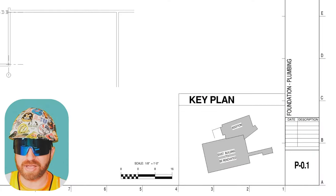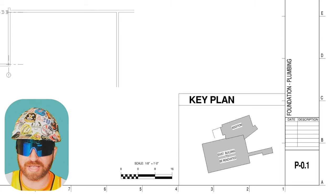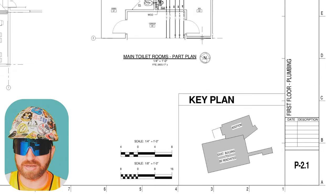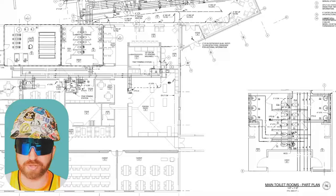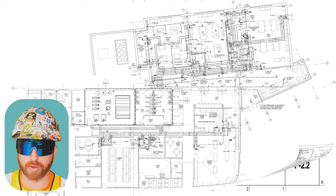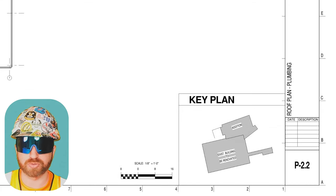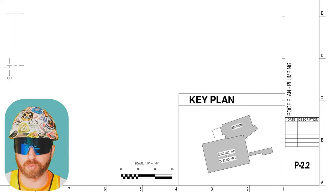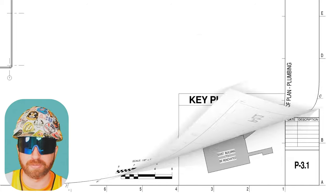Next up, we have P-0.1 Foundation Plumbing, which is all your underground plumbing within the perimeter or inside of the building. Then we have P-2.1 First Floor Plumbing, which is going to be the bulk of the plumbing on this project — it feeds all the equipment, all the fixtures, and everything else where the supply and return piping is going. P-2.2 Roof Plan Plumbing — earlier I talked about those roof drains, and this is why we have the roof plan plumbing set, to see where those locations tie in at the roof level.